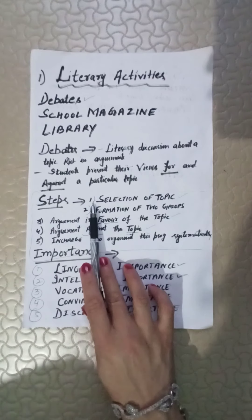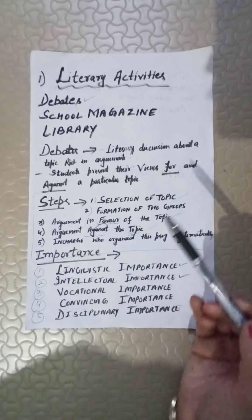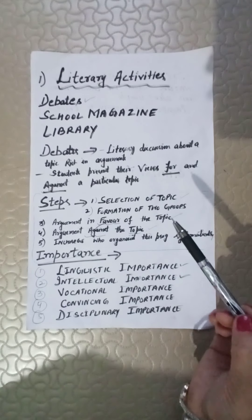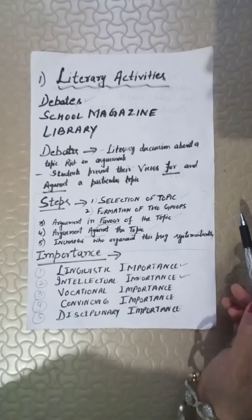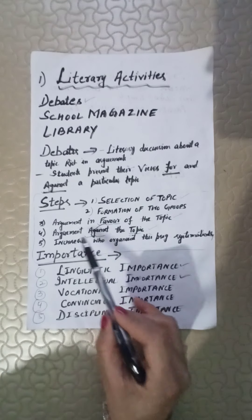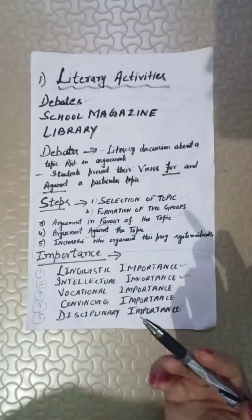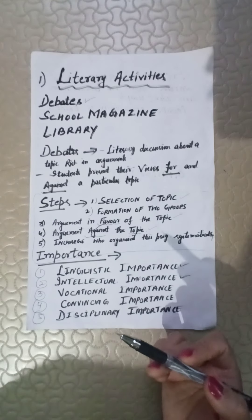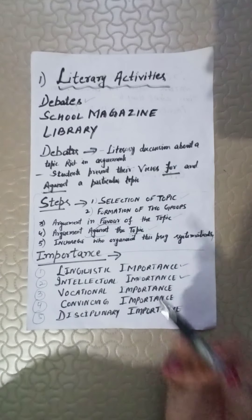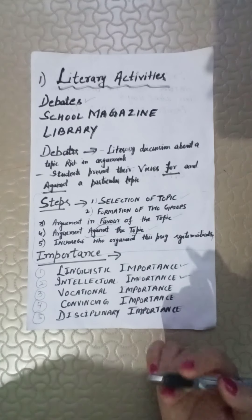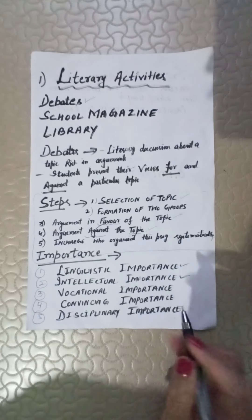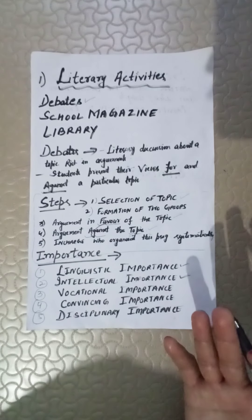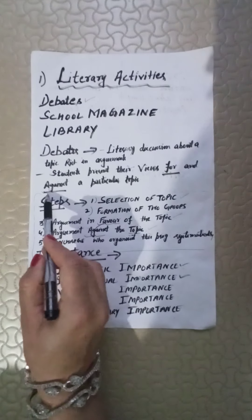Now, the first step is the selection of topic — a topic which children can speak about. The second is the formation of two groups: one in favour and one against, with arguments for and against the topic. The time is fixed — 3 to 5 minutes — during which children present their views to the audience. There is a stage secretary who hosts the whole program, manages the full responsibility of the event, and keeps track of time.